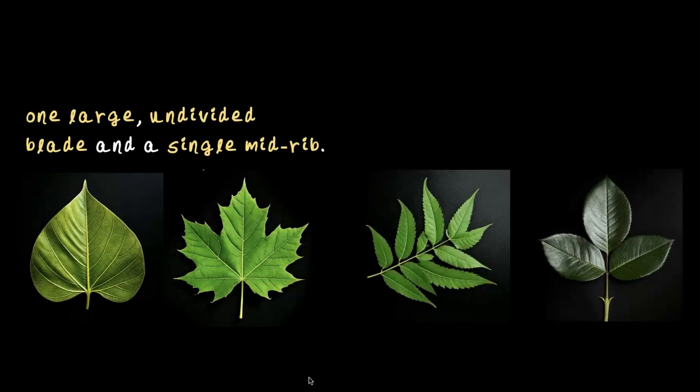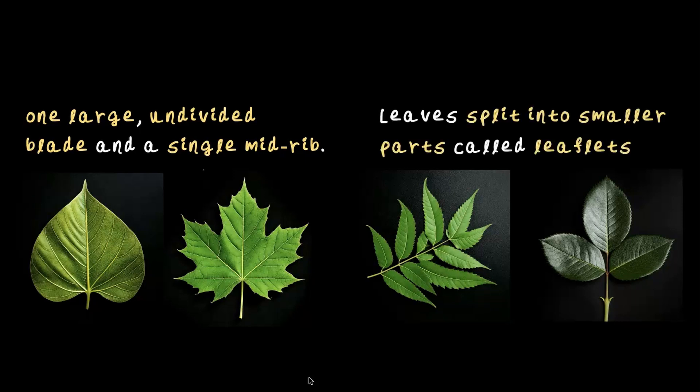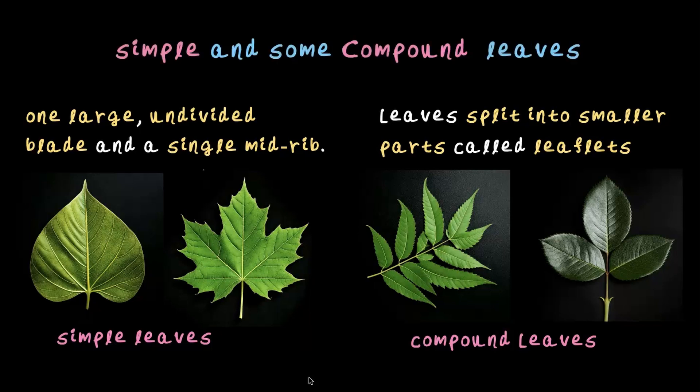Look at these two. What is the difference? Here you see instead of a single blade, the leaf is split into smaller parts. The leaf split into smaller parts called leaflets. The one with large undivided blade is called simple leaf and the one that splits into smaller parts called leaflets are compound leaves. These are the two major types of leaves: simple and compound leaves.